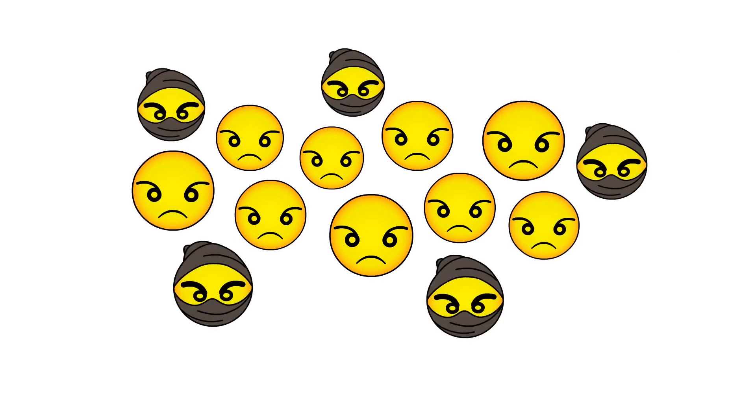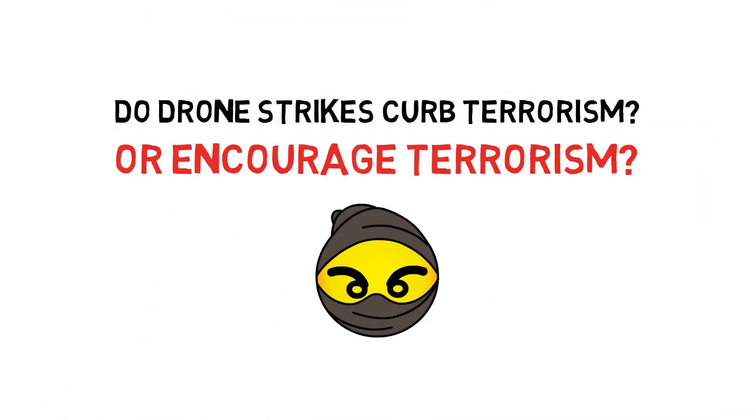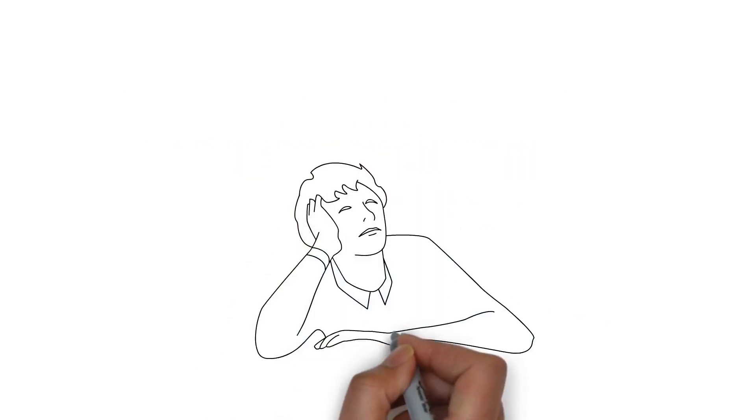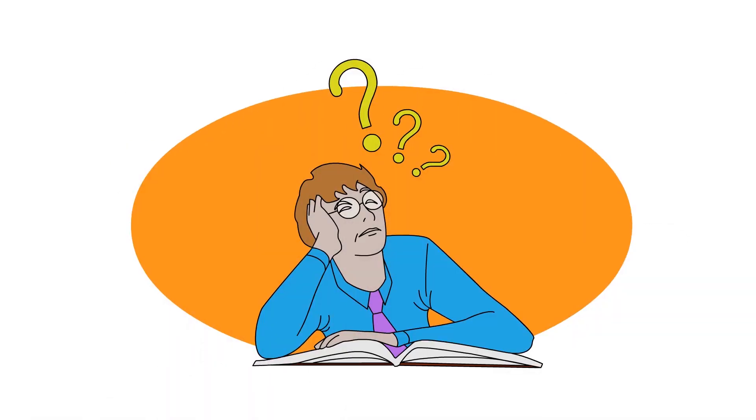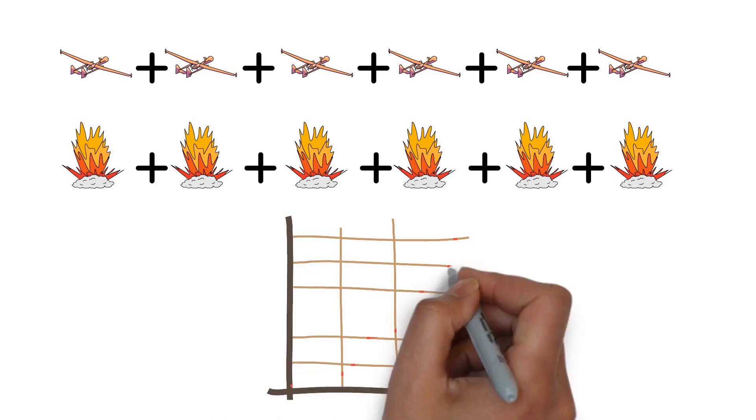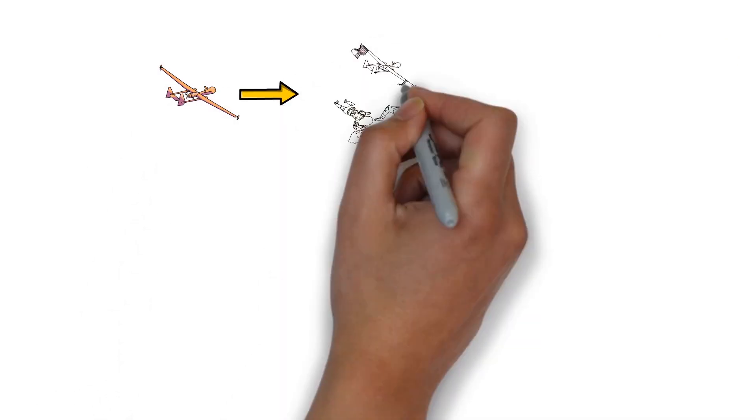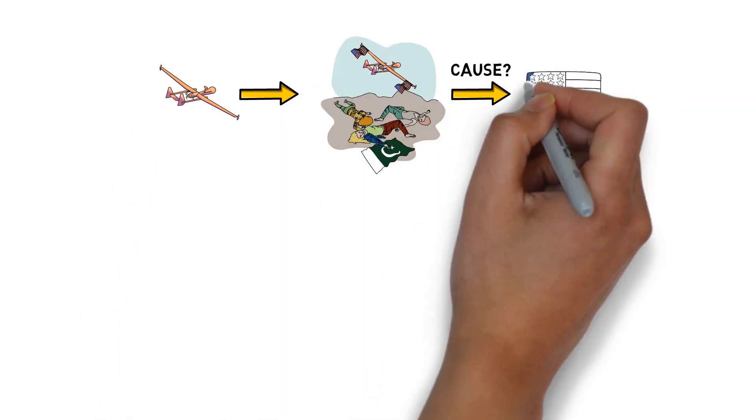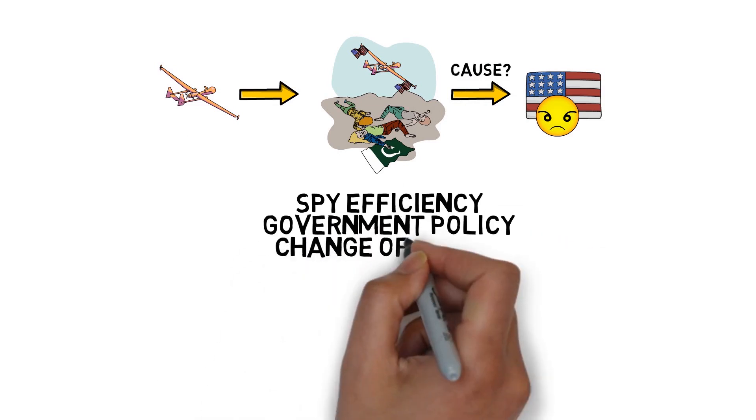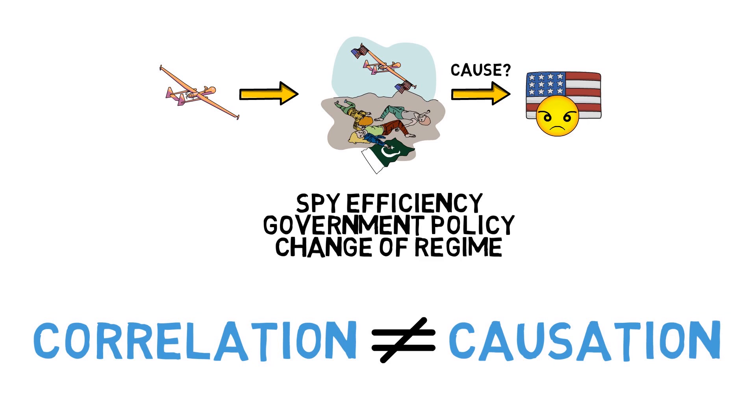This naturally leads us to ask, do drone strikes curb terrorism or encourage terrorism? But finding an answer to this question has been difficult. We can count the number of drone strikes, the number of subsequent terror attacks, and even quantify anti-U.S. hatred, anti-U.S. protests, and radicalization. But it is hard to test whether drone strikes cause changes in patterns of terrorism and attitudes in the targeted country because several other factors are also changing at the same time.